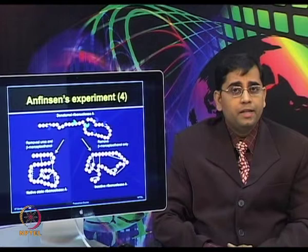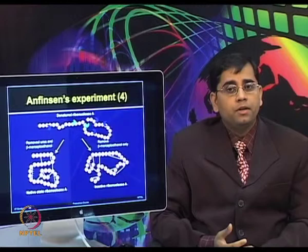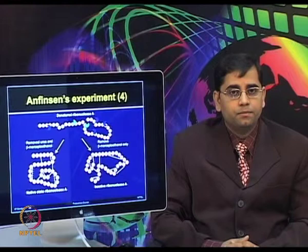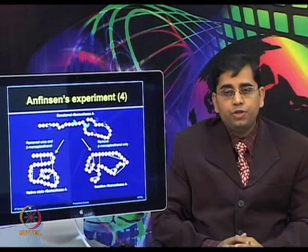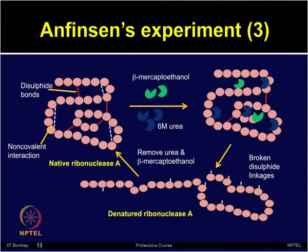When Anfinsen repeated this experiment in the presence of denaturant urea, that led to the regeneration of less than 1 percent of enzyme activity. The reason is that urea prevented correct disulfide pairing, which resulted in a scrambled form known as scrambled ribonuclease. If you mathematically calculate, due to the presence of 4 disulfide bonds and 8 cysteine residues, it can give rise to 105 different forms in which these 4 disulfide bonds can be formed.